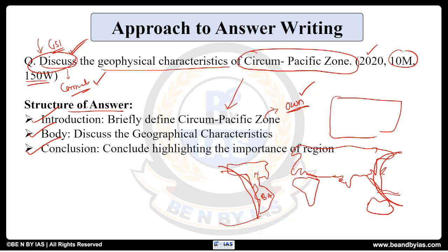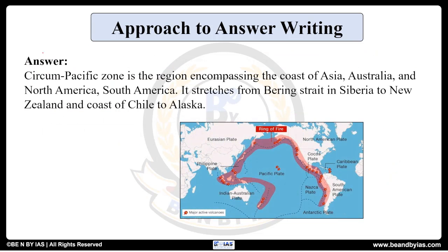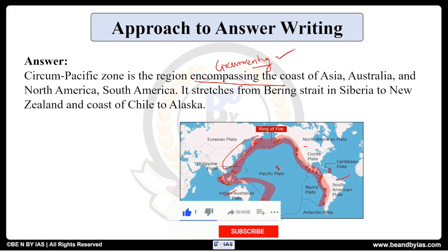So mention that diagram. Then for the body, you have to discuss the different geophysical characteristics — geophysical rather than just geographical, because many geophysical factors also happen there. For the conclusion, you need to conclude appropriately by highlighting the importance of the region. For the introduction: 'Circum-Pacific Zone is the region encompassing or circumventing the Pacific Ocean.' You can write that it stretches and covers North America, South America, Australia, Indonesia, Philippines — or simply the entire east coast of Asia. Or present it in diagrammatic form.